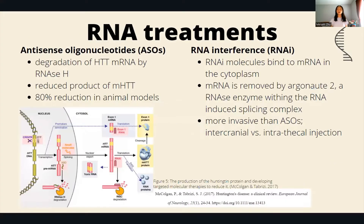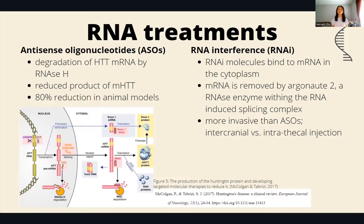There are also RNA-based treatments being tested. These RNA treatments are most active in the cytoplasm, where RNases degrade the mutated Huntington protein, preventing the formation and synthesis of the mutated protein.